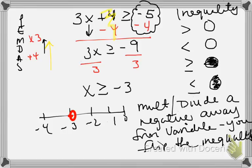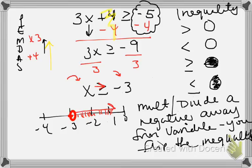We draw an arrow in the direction that makes the inequality true. If you put your variable on the left side and your number on the right side, the inequality sign tells you which way to go. Pick a number greater than negative three — like three. Three goes to the right on the number line, so we go to the right. Any point on that side makes the statement true: negative two, negative one, zero are all greater than negative three.